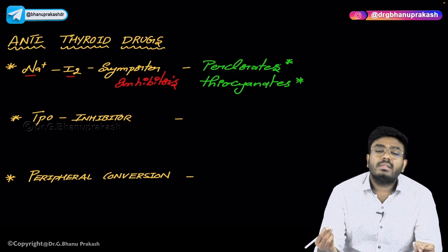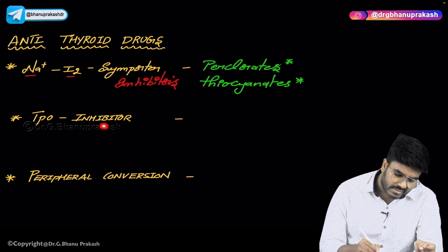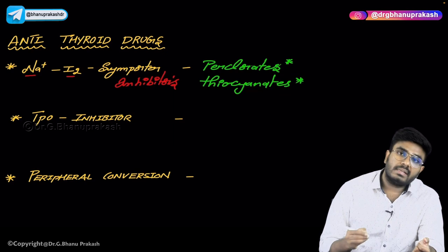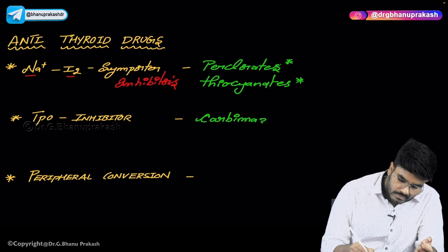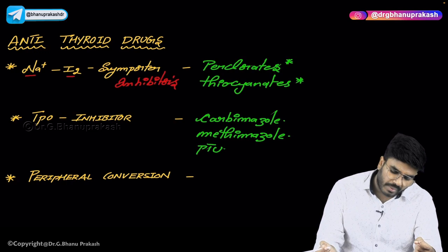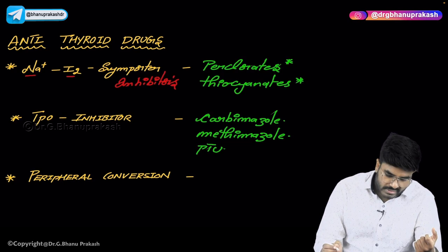Next are thyroid peroxidase inhibitors. Thyroid peroxidase is an enzyme that facilitates oxidation, organification, and coupling reactions needed for T3/T4 production. If we inhibit thyroid peroxidase, the entire T3/T4 synthesis process is affected. Drugs that inhibit thyroid peroxidase include carbimazole, methimazole, and PTU (propylthiouracil).